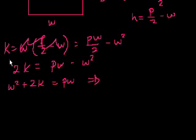If we multiply both sides of this by 2, 2 times k is 2k, 2 times pw over 2 is pw, 2 times minus w squared is minus 2w squared. So in this step, we have to add 2w squared to both sides. So we have 2w squared plus 2k equals pw.